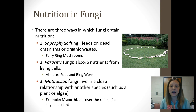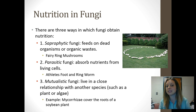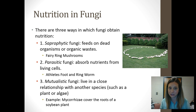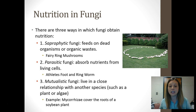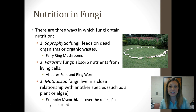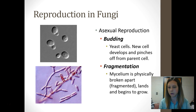Parasitic fungi absorb nutrients from cells that are still living. One type you're really familiar with is athlete's foot — a fungus taking nutrients from the cells in your skin. Another is ringworm, which is not actually a worm but a fungus. Mutualistic fungi get nutrition by living in a close symbiotic relationship with another organism where both are benefiting. An example is mycorrhizae covering the roots of a soybean plant.